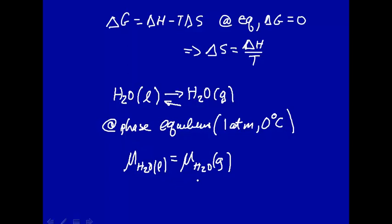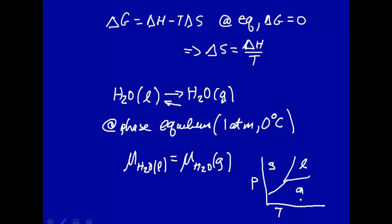Let me just draw the phase diagram here — we have pressure and temperature. So we have something like this. Along one of these phase equilibrium lines, we have to have the chemical potential of the two phases equal. For example, this is solid, this is liquid, and this is gas. Here along the liquid-gas line, at any point along there, we have to have phase equilibrium.